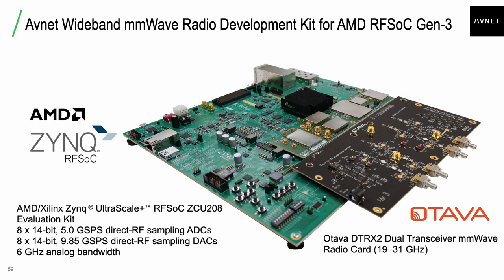There is a next generation called the DFE, which is optimized for 5G with some hardened IP, whereby the analog output IF goes up to 7.125 gigahertz. On the right is the Otava DTRX2, which handles up-and-down conversion to and from IF to millimeter wave. DTRX2 stands for dual transmit receive by 2, a card co-developed with Otava supporting the Xilinx platform for up to 31 gigahertz of FR2 millimeter wave.